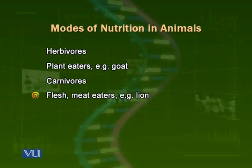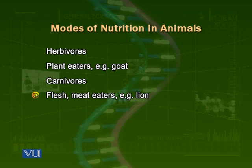Then come carnivores. Carnivores are organisms which acquire their energy or food in the form of meat or proteins — we can call them flesh eaters. For example, lions eat deer, monkeys, cows, or buffalos. Carnivores are those organisms which eat meat or flesh.